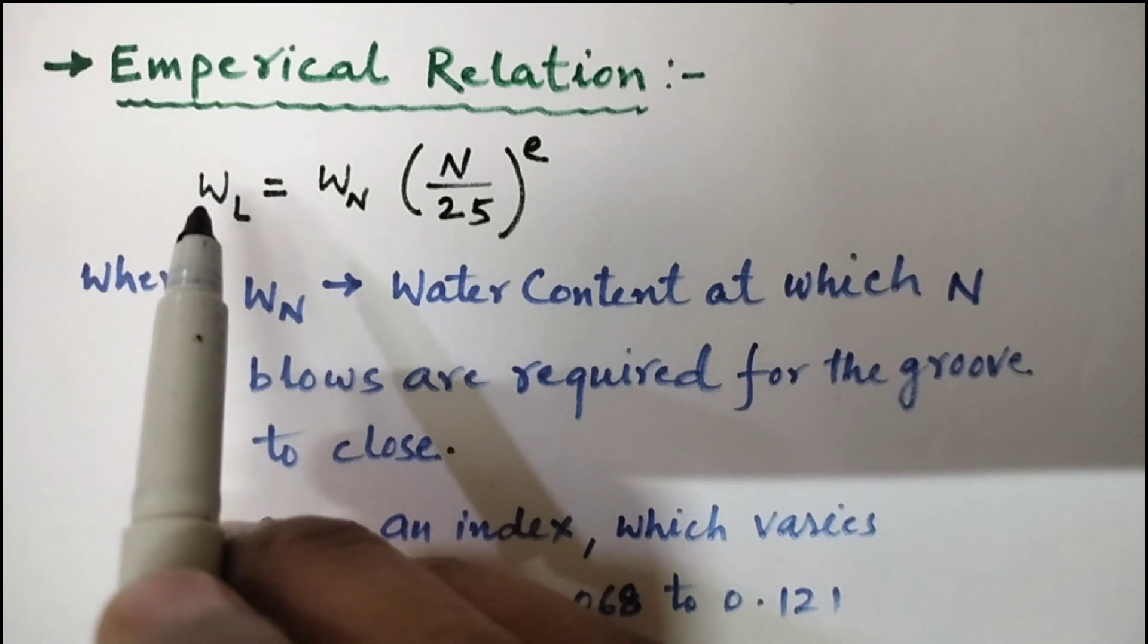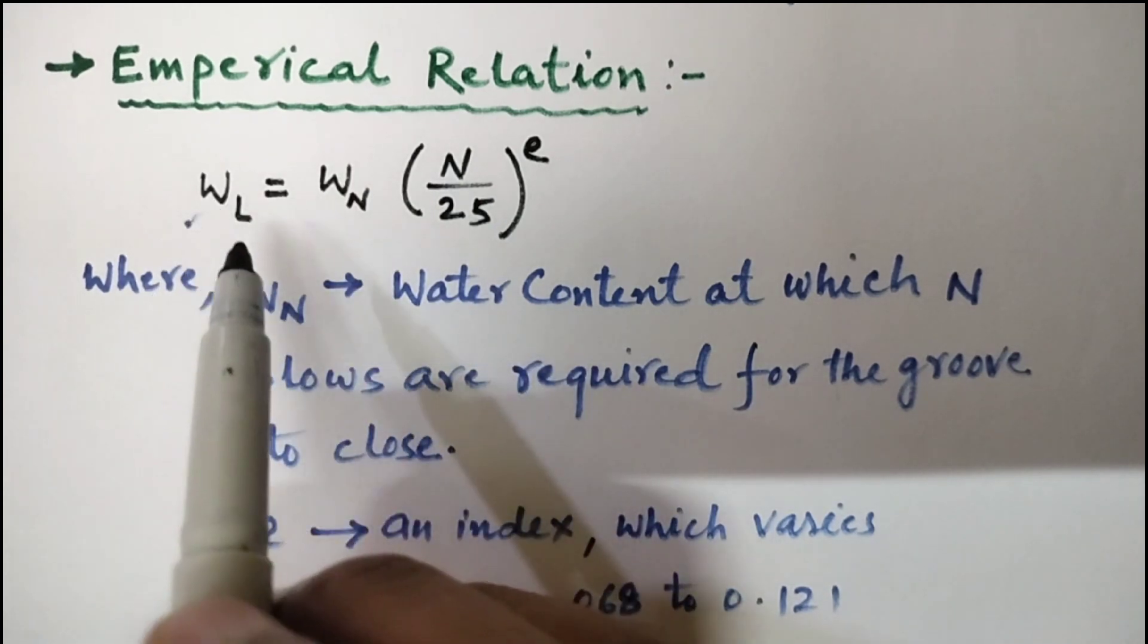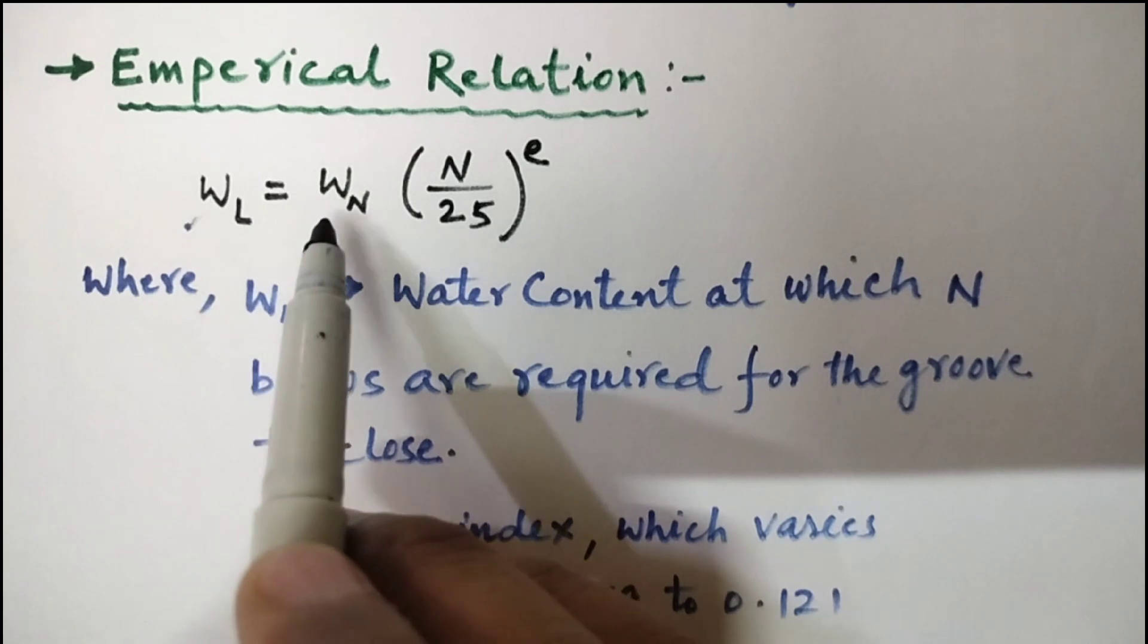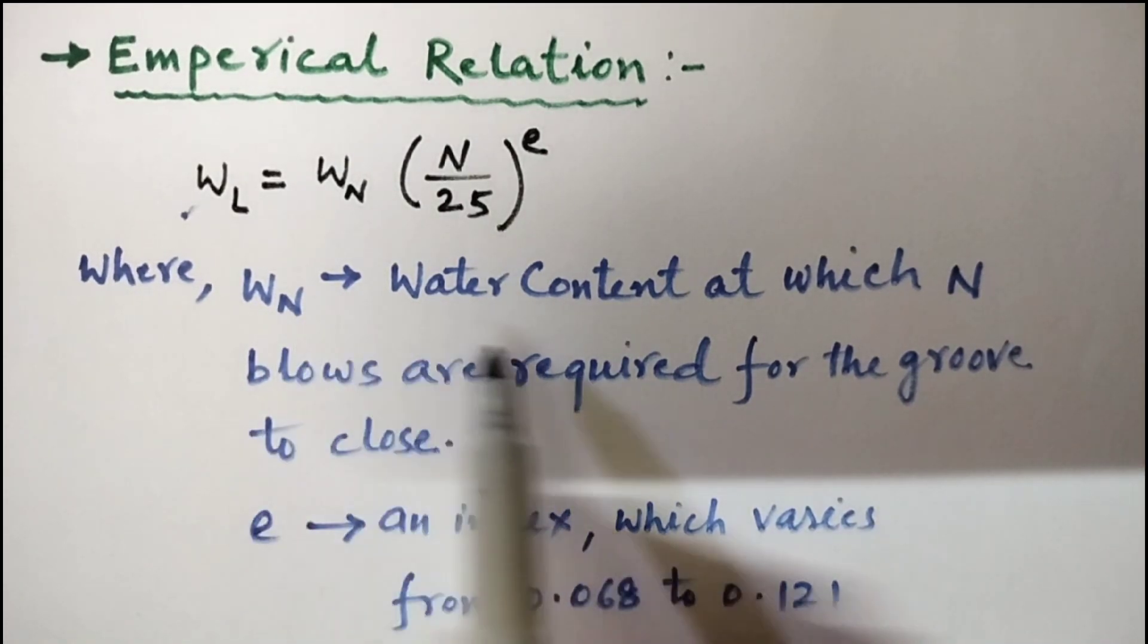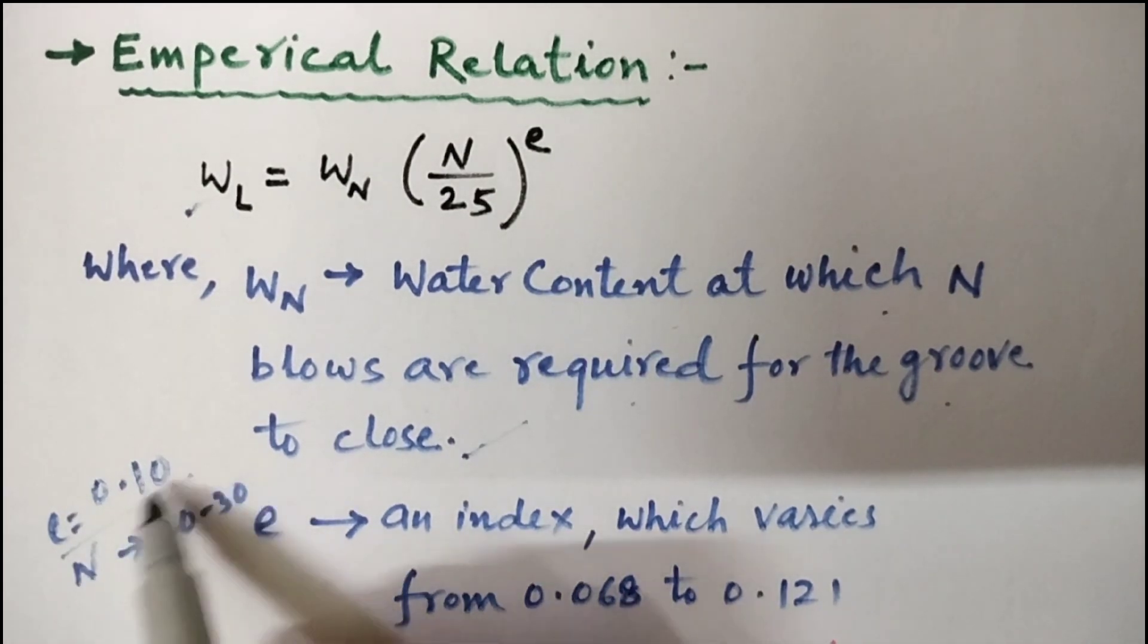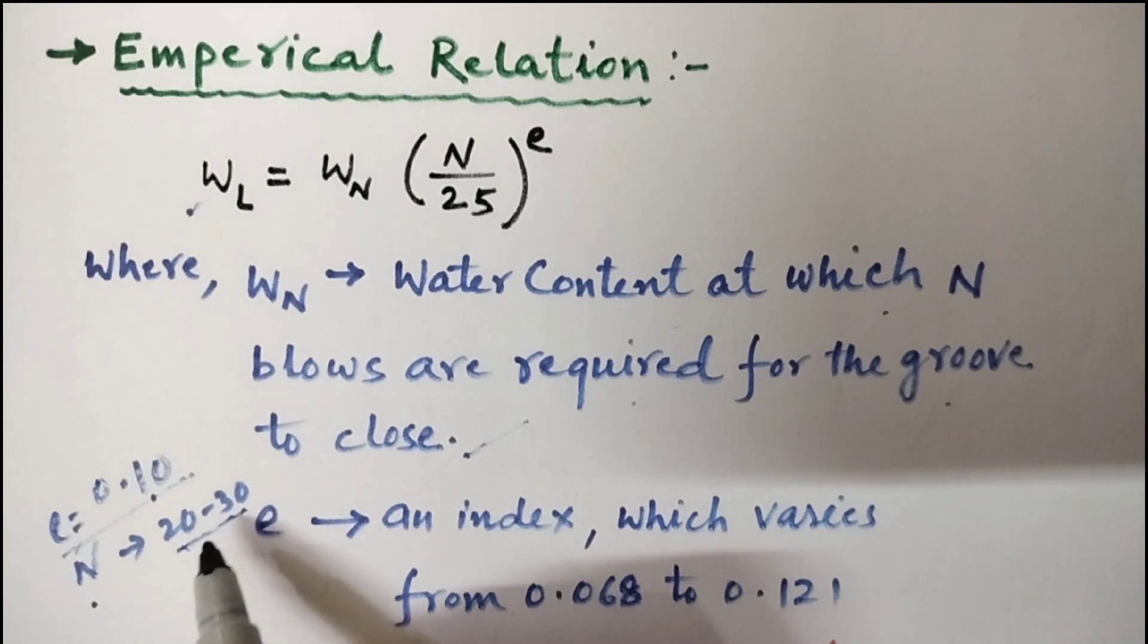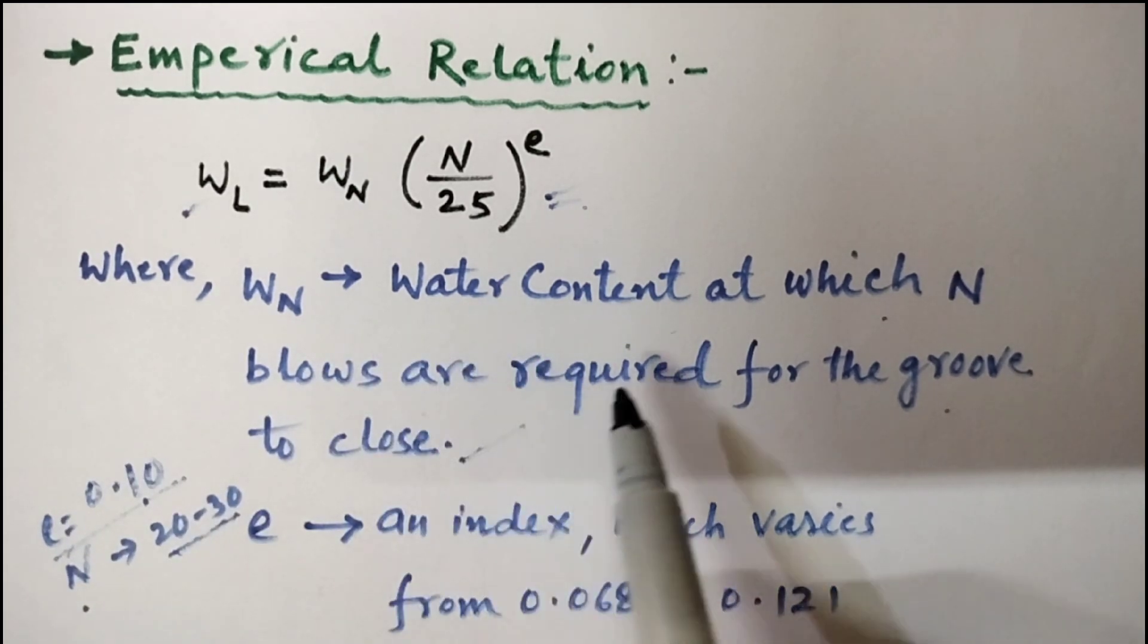In this method, attempt has also been made to develop empirical relation which enables the determination of liquid limit from only one observation. In this method, the following equation is used: WL equals Wn times (n/25) to the power e. Where Wn is water content at which n blows are required for the groove to close. And e is an index which varies from 0.068 to 0.121. A medium value of 0.1 is assumed for e, when the number of blows n varies from 20 to 30. The one point method can be used only for approximate estimation of the liquid limit.